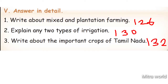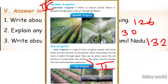Question 2: Explain any two types of irrigation. Take page number 130. Sprinkler irrigation is similar to natural rainfall; water is sprayed through pipes in the air through sprinklers. Drip irrigation is a type of micro irrigation system that saves water and soil nutrients. Water drips slowly into the roots of plants through pipes, which can be above or buried below the soil surface, directly reaching the roots and minimizing evaporation.